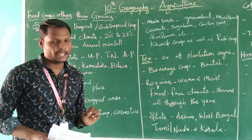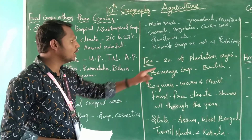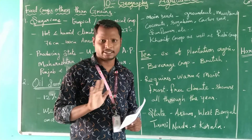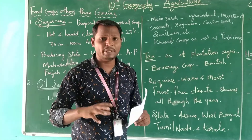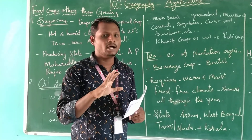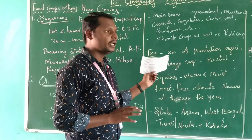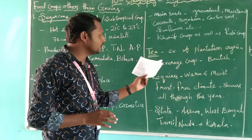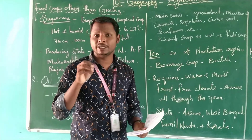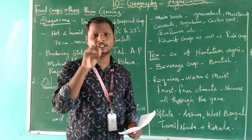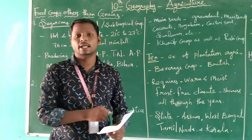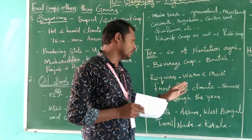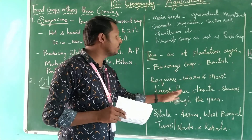The third crop is tea. Tea is a good example of plantation agriculture. Plantation agriculture means cultivating a single crop over a large area. Tea is a beverage crop introduced in India by the British. It requires warm, moist, frost-free climate with frequent showers throughout the year.